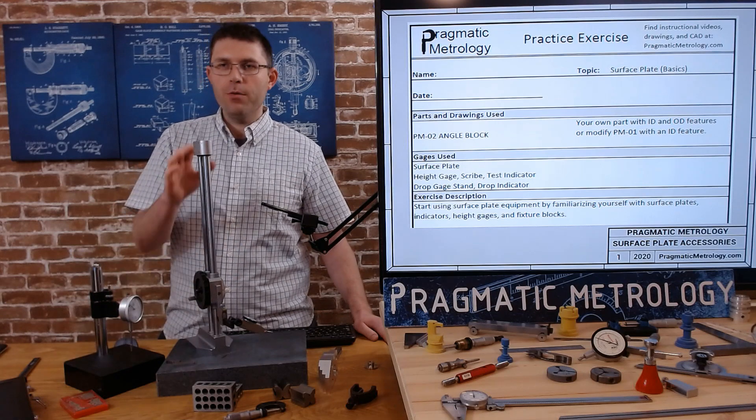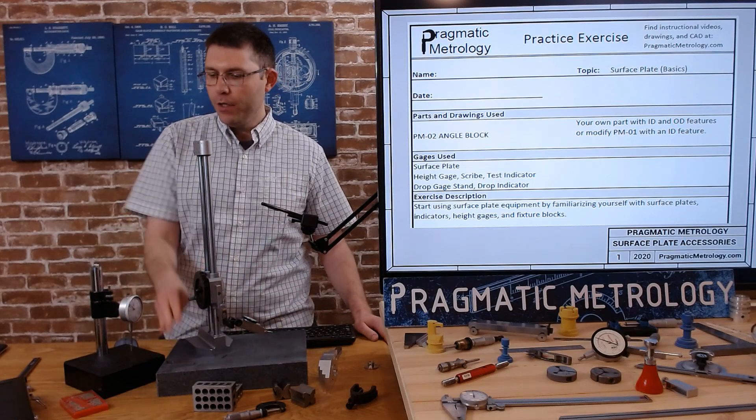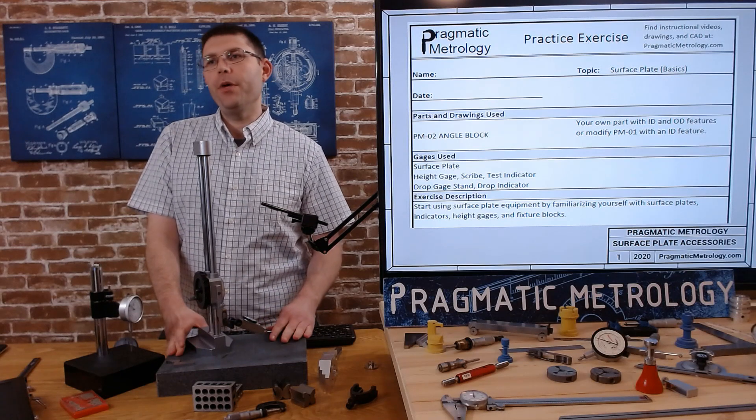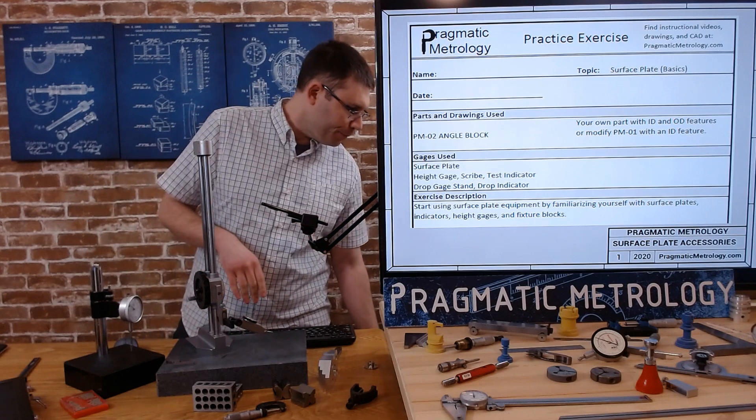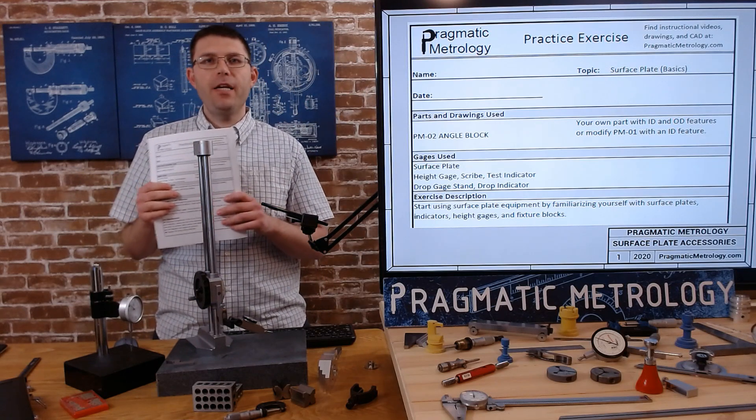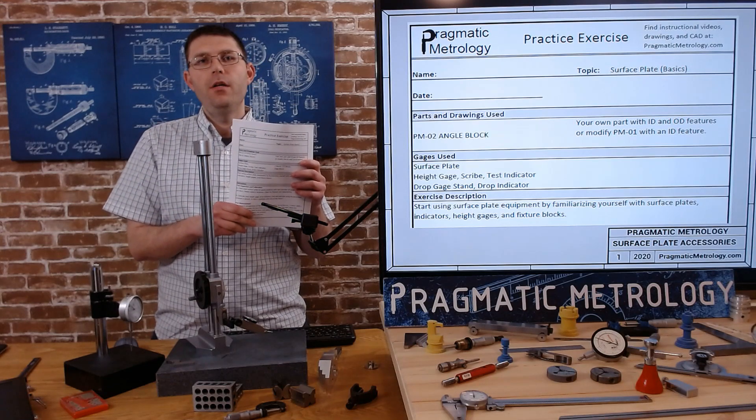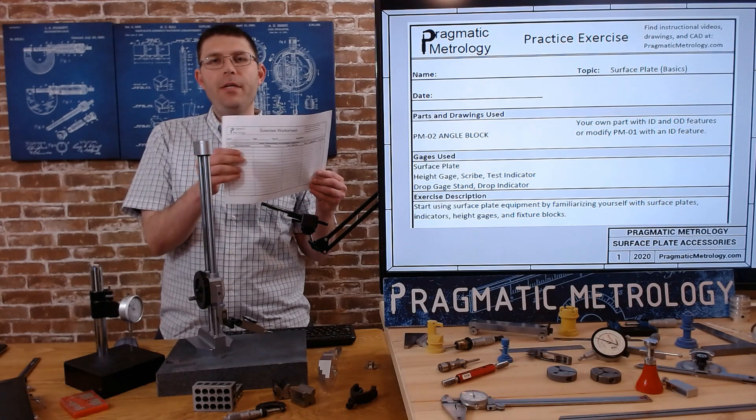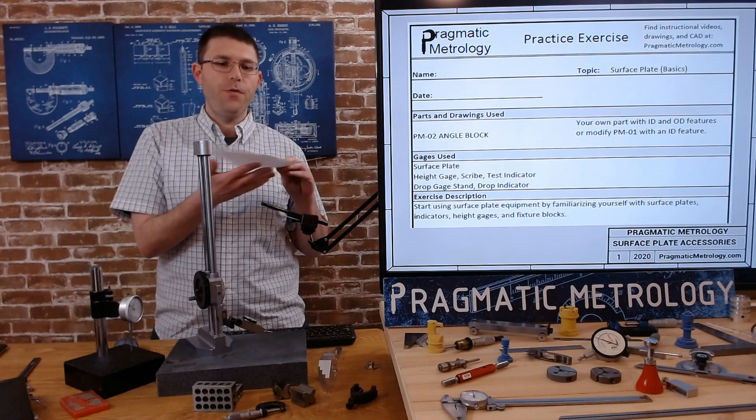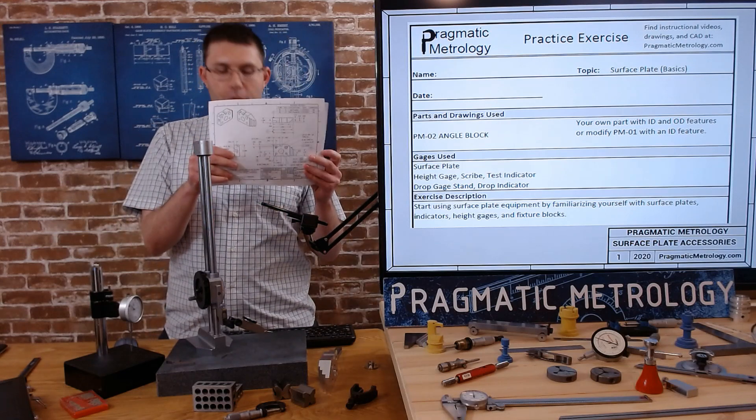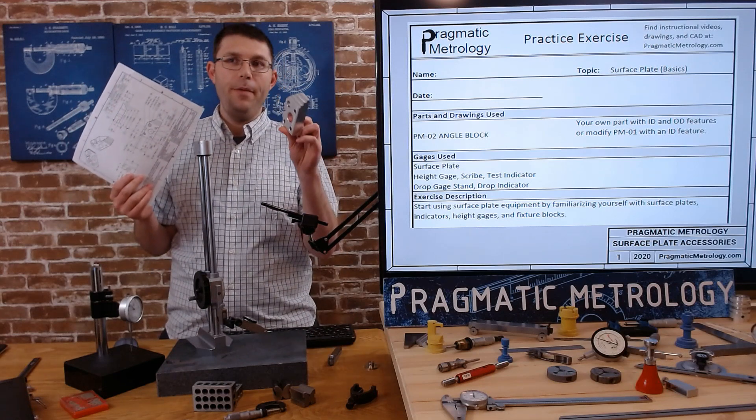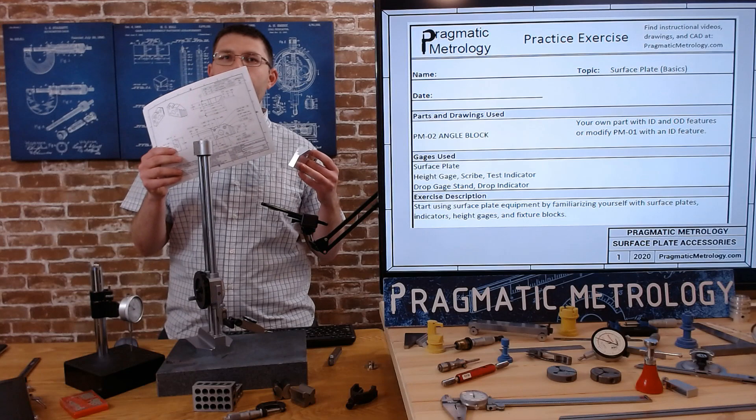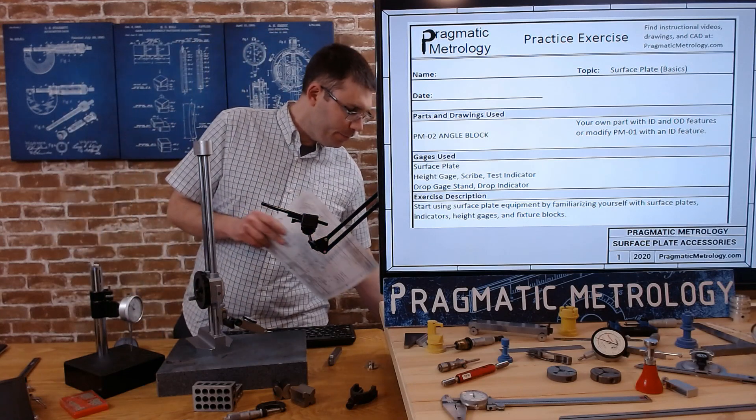So today, in this video we're just really going to focus on how to use the test indicator scribe and drop indicator on a surface plate without involving any of these additional work fixturing accessories that we have. So let's look through the practice exercise and please visit the Pragmatic Metrology website to get a copy of the exercise so you can follow along. You can download a PDF there and you can download a worksheet to write down your work. And you'll also be able to find prints and CAD files if you want to make this 3D printed or machine it yourself.